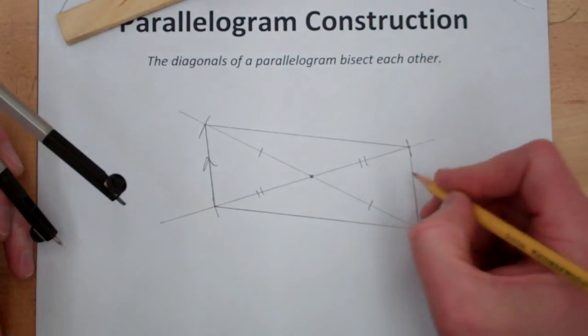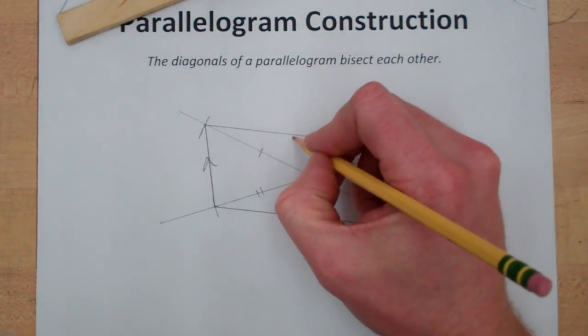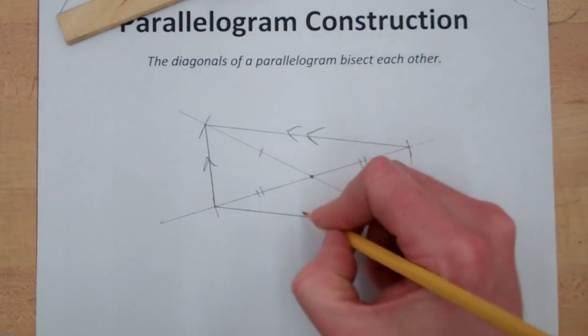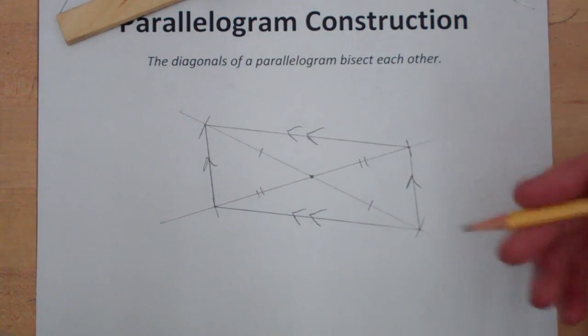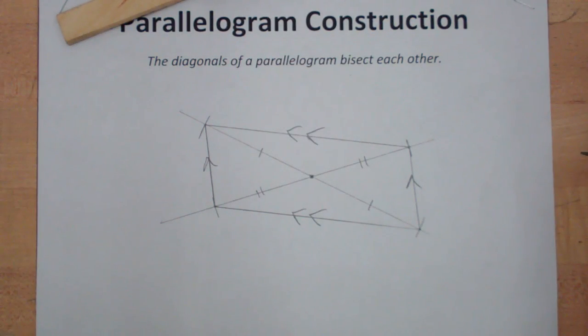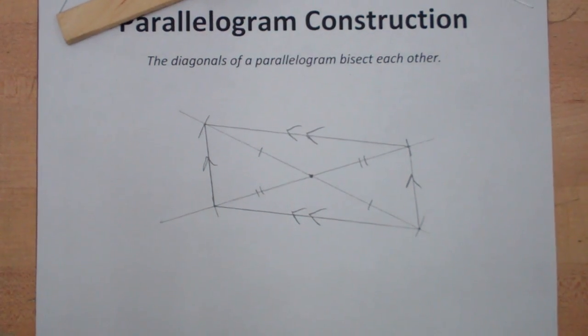So here these two sides would be parallel to each other, and these two sides would be parallel to each other as well, as well as congruent and any other special properties that parallelograms have. I'll see you in the next one.